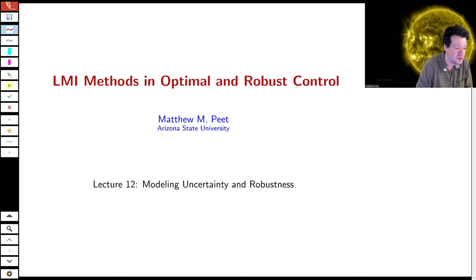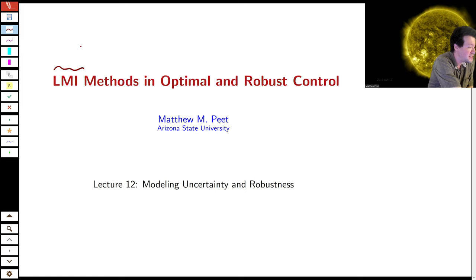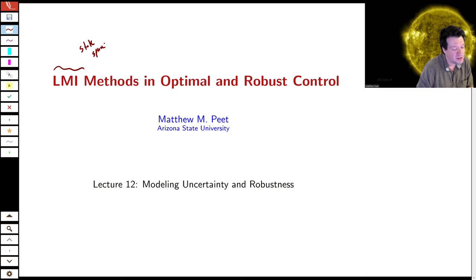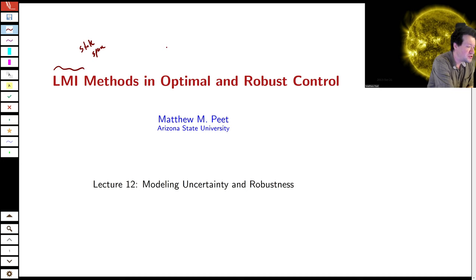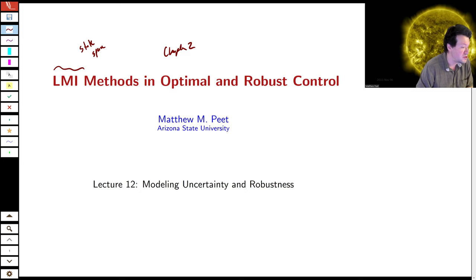In this series of lectures, we're going to expand on our work. In chapter one, we defined LMIs and talked about state space and some of the basics of control systems. In chapter two, we talked about optimal control — we identified what we were trying to optimize, the H-infinity norm of exogenous inputs to regulated outputs, and we solved problems for the H2 norm, the H-infinity norm, and so forth.